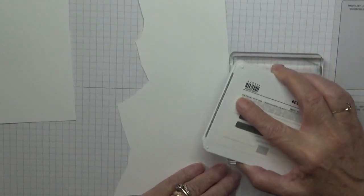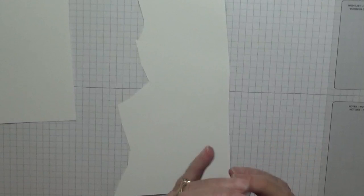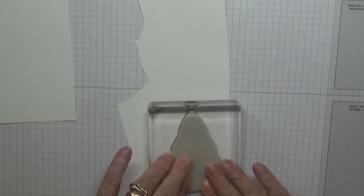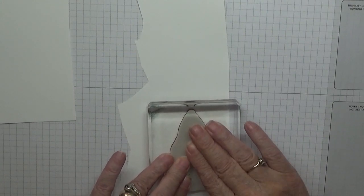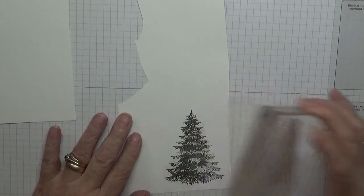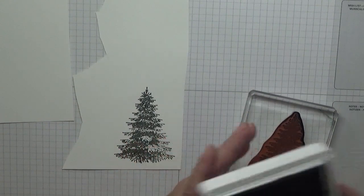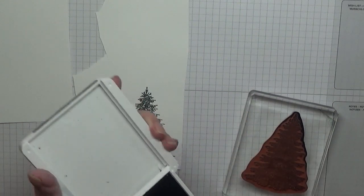Right, tree stamp, evening evergreen, and we're going to ink it up really well and stamp it down. Lovely lovely, close this up, don't need it anymore.